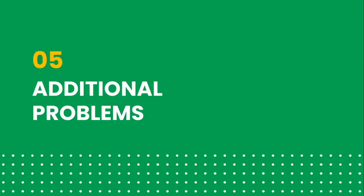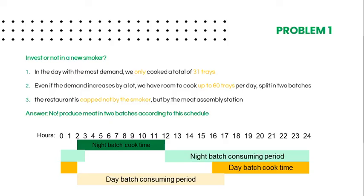Finally, we will provide our approach to the additional problems. In the first problem, we were asked to calculate the number of years it would take the restaurant to recover the investment in a new smoker. After implementing the changes to the model according to our recommendations, we simulated each day of the week, checked the order registries, and defined an interval of stock quantities for each type of meat to be optimized using OptQuest. In the day with the most demand, we only cooked a total of 31 trays. Even if demand increased significantly, we still have room to cook up to 60 trays per day, split in two batches. In our analysis, the restaurant is bottlenecked not by the smoker but by the meat assembly station. Our recommendation is to produce two batches per day according to the schedule.